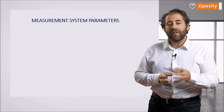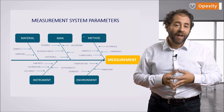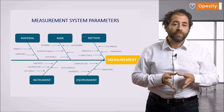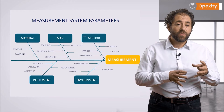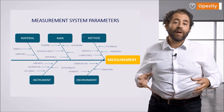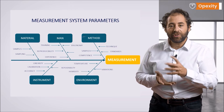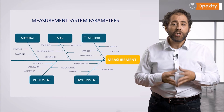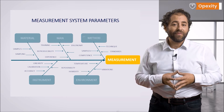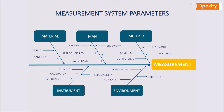The number of factors and parameters affecting the measurement system and thus the results obtained is very large. In a traditional way, we can group them with the Ishikawa 5M diagram: material, men, method,